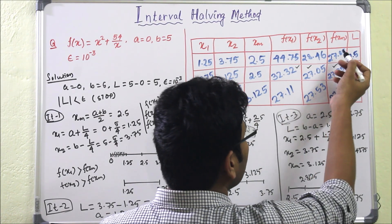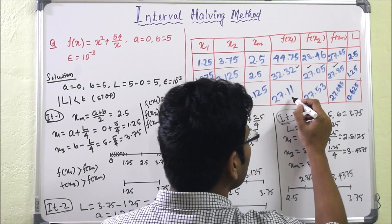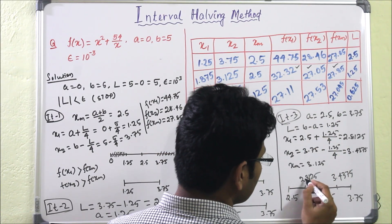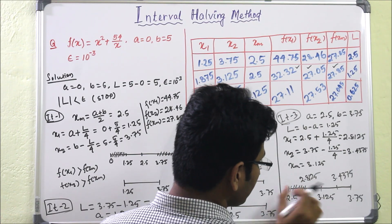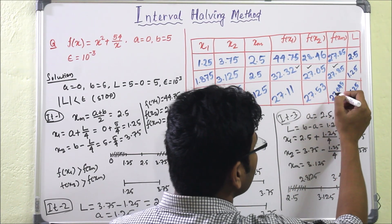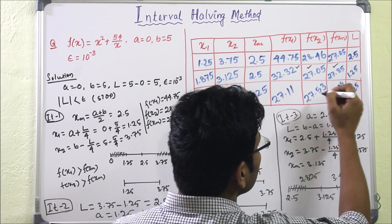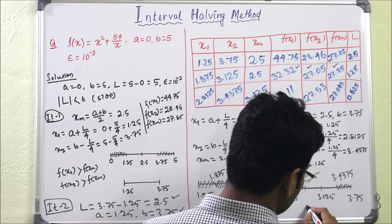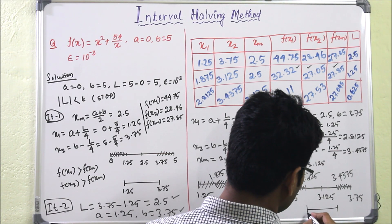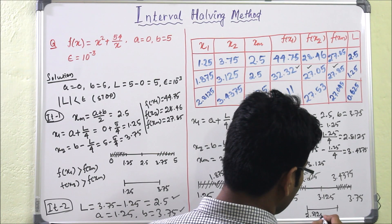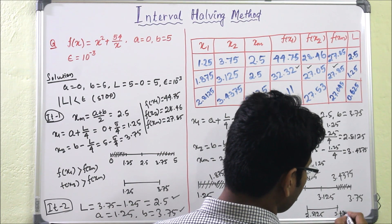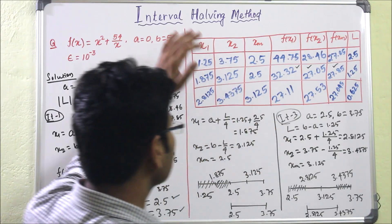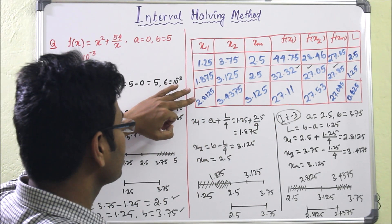Comparing function values: f(x1) = 27.11 and f(xm) = 27.045, so f(x1) > f(xm) — delete the left interval. f(x2) = 27.53 and f(xm) = 27.045, so f(x2) > f(xm) — delete the right interval. The remaining interval is 2.8125 to 3.4375, with length 0.625.